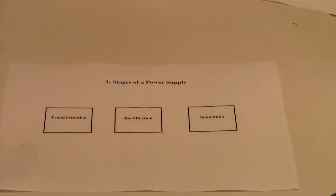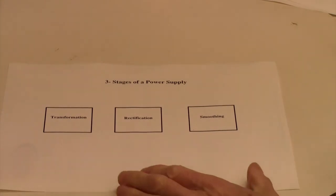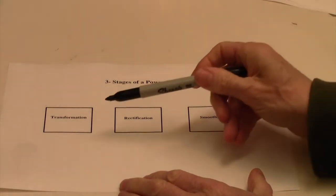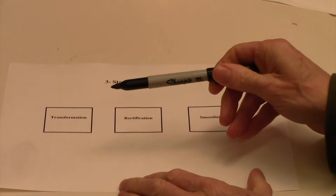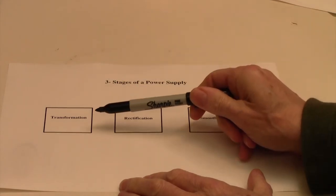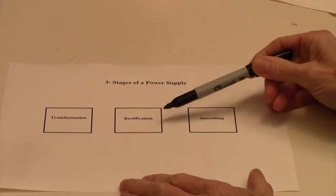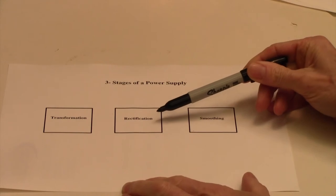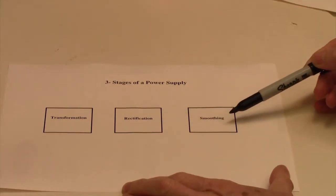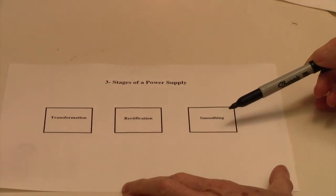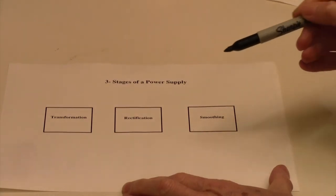Let's just do a quick summary of how a power supply works. It has three stages. The transformation, which is done by the transformer. The rectification, which is done by diodes. And the smoothing, which is done by filter capacitors.